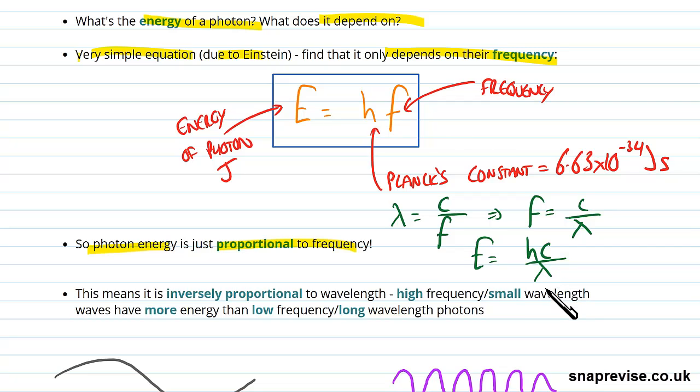So what do we see from that? Well, we have that it's inversely proportional to wavelength. That's what we've just calculated there. E is proportional to one over lambda. So high frequency small wavelength waves have more energy than low frequency long wavelength photons.